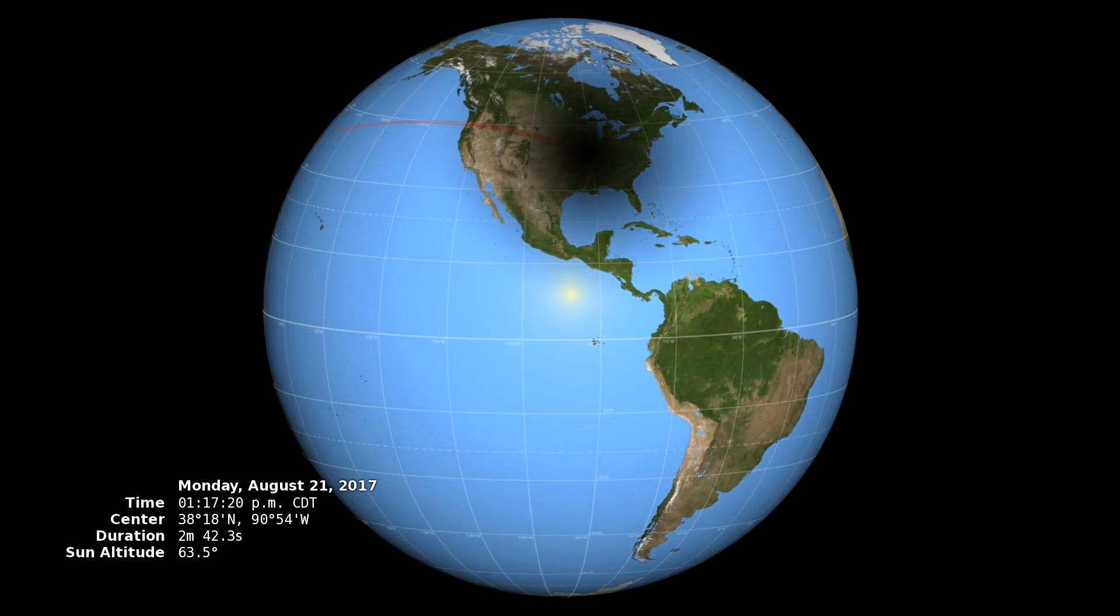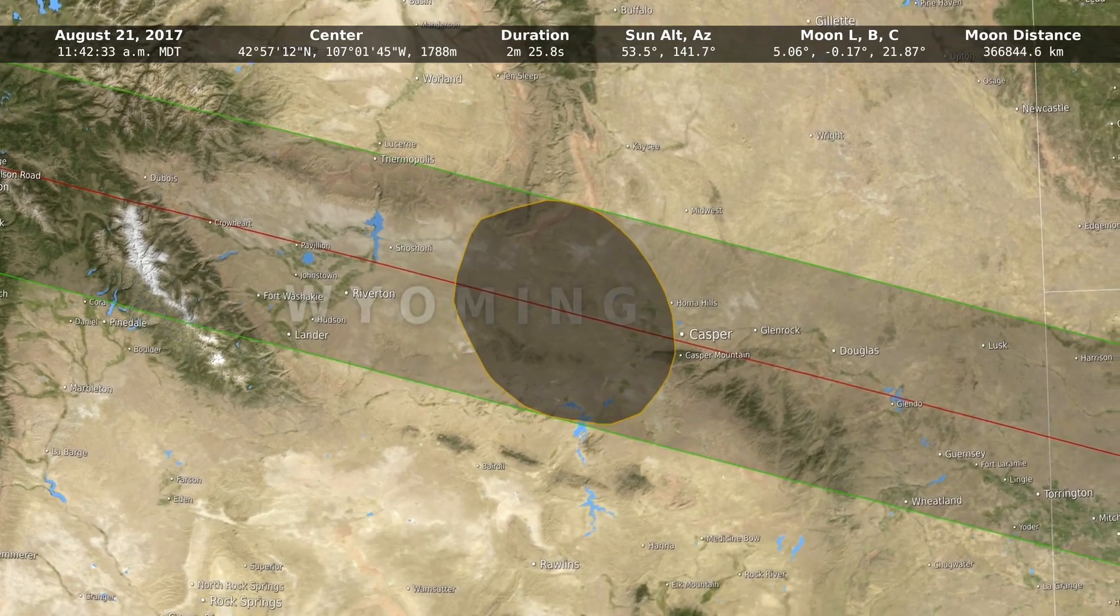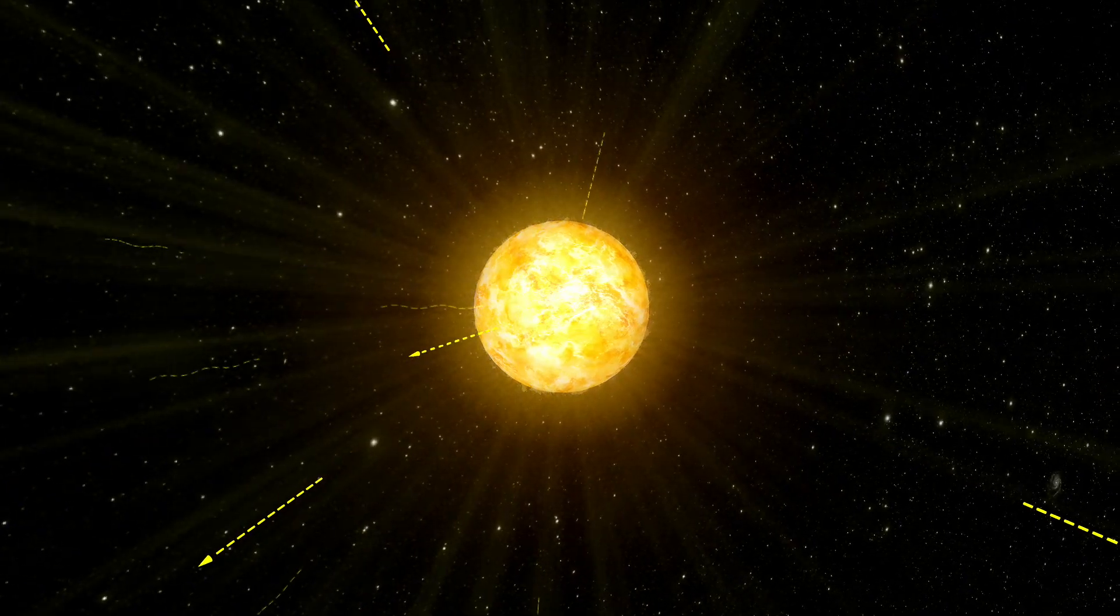A team of scientists will combine data from EPIC with measurements taken on the ground to learn more about how the sun's energy is absorbed and reflected in Earth's atmosphere.